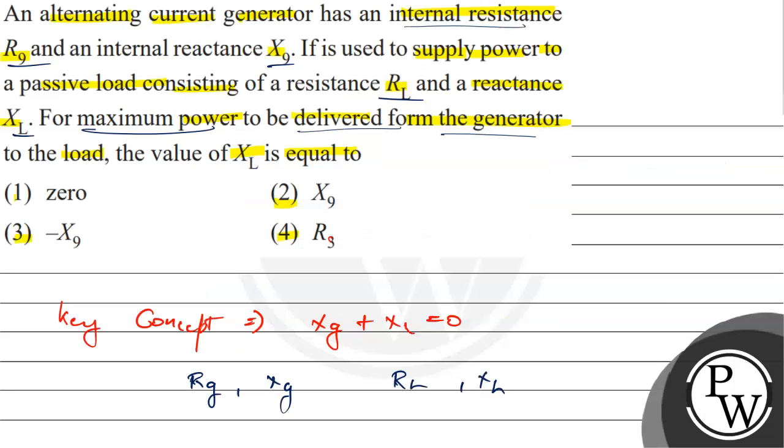So this means Xl is equal to minus Xg, which is option 3. Hope you understood it well. Thank you.